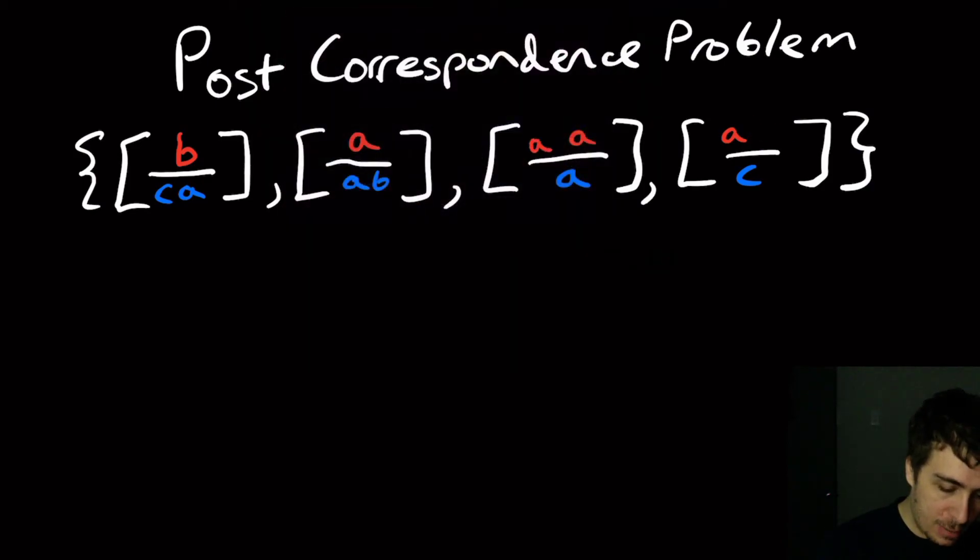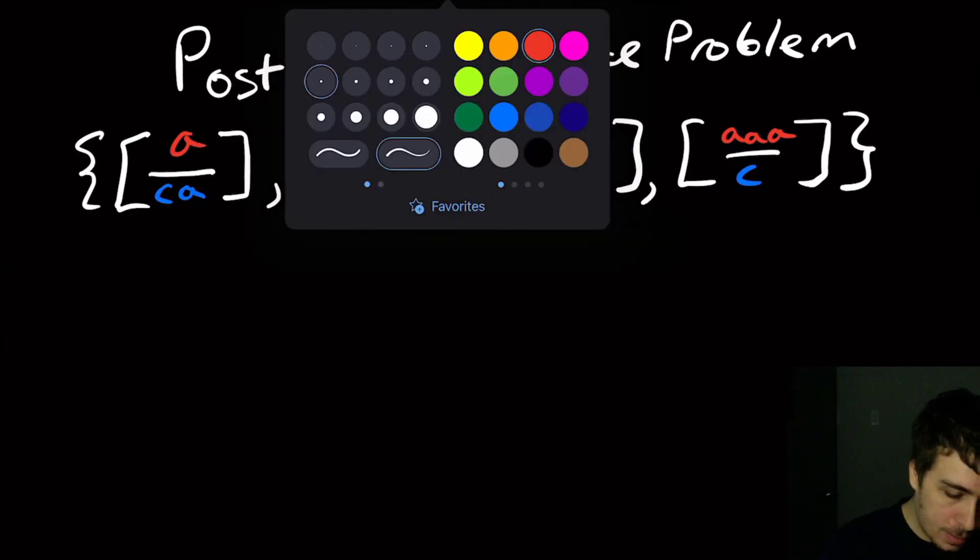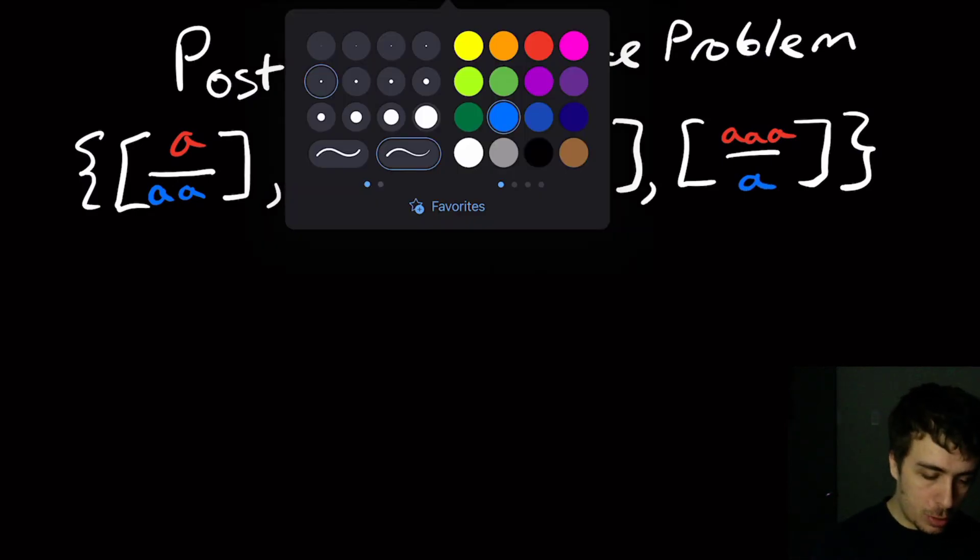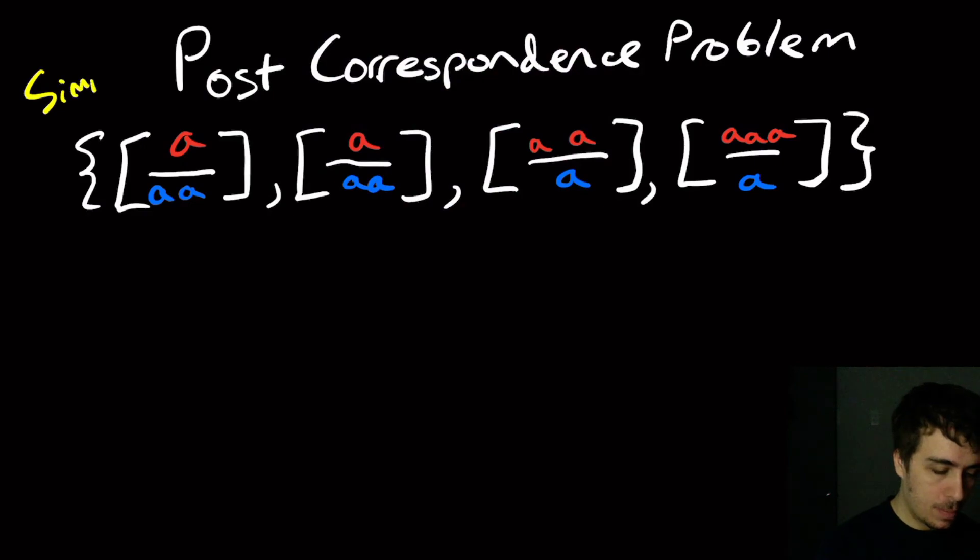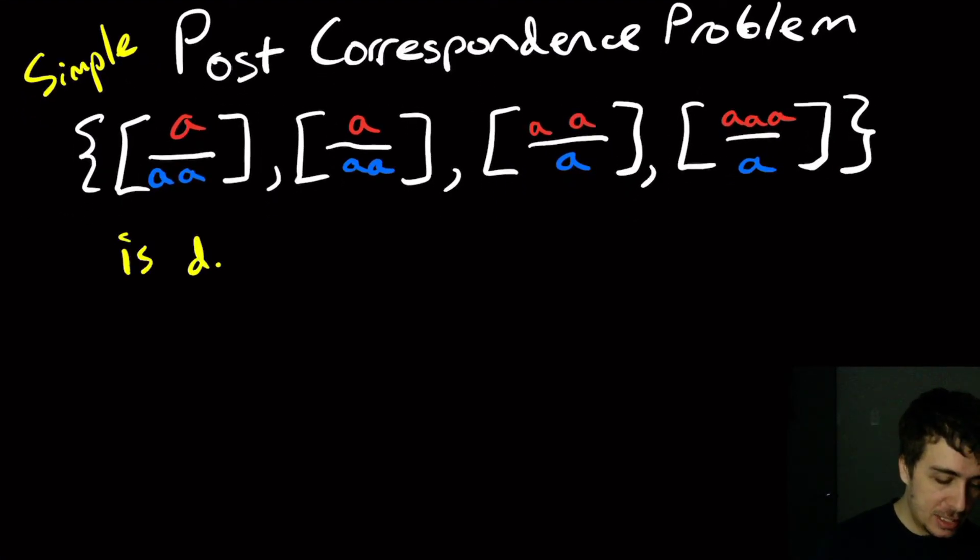The tops and bottoms could be any length. So let's say that we have something like this, and everything is an A. So the C and this B go away, I'm going to change those to A's, and this last C I'm also going to change to an A. This is what we're going to call the simple post-correspondence problem, because there's only one character,